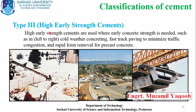The third type is high early strength cement, which is used where early strength is needed — for example, fast track pavements or roads, rapid formwork removal, or precast concrete where we must minimize traffic disruption. These are some common examples of where high early strength cement is applied.